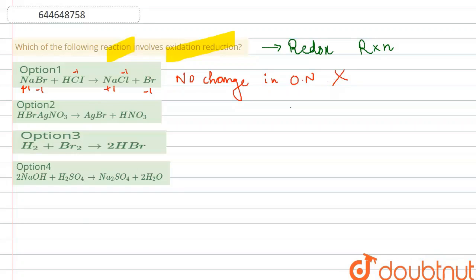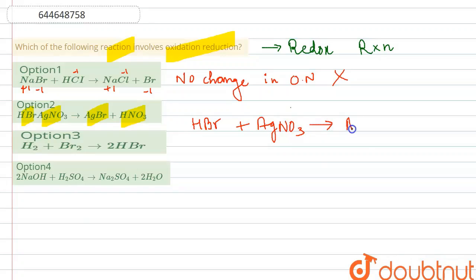Moving to option 2: HBr reacts with AgNO₃ to form AgBr and HNO₃. Here H is in +1 oxidation state, Br is −1, Ag is +1, and the oxidation states in the products remain the same — +1, −1, +1, −1. There is no change in oxidation number for any of the given species, so option 2 is also incorrect.